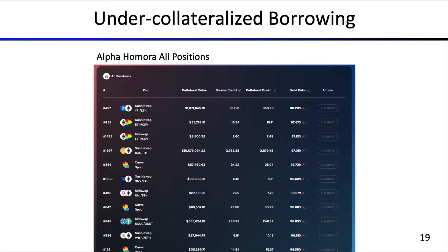In AlphaHomora you can also see all open positions and inspect on their web page how these positions look, what's the debt ratio. You can explore the collateral credit, borrow credit, and the overall collateral value. Note that there are some pools that are stablecoin pools and other pools that are more speculative, non-stable coins.